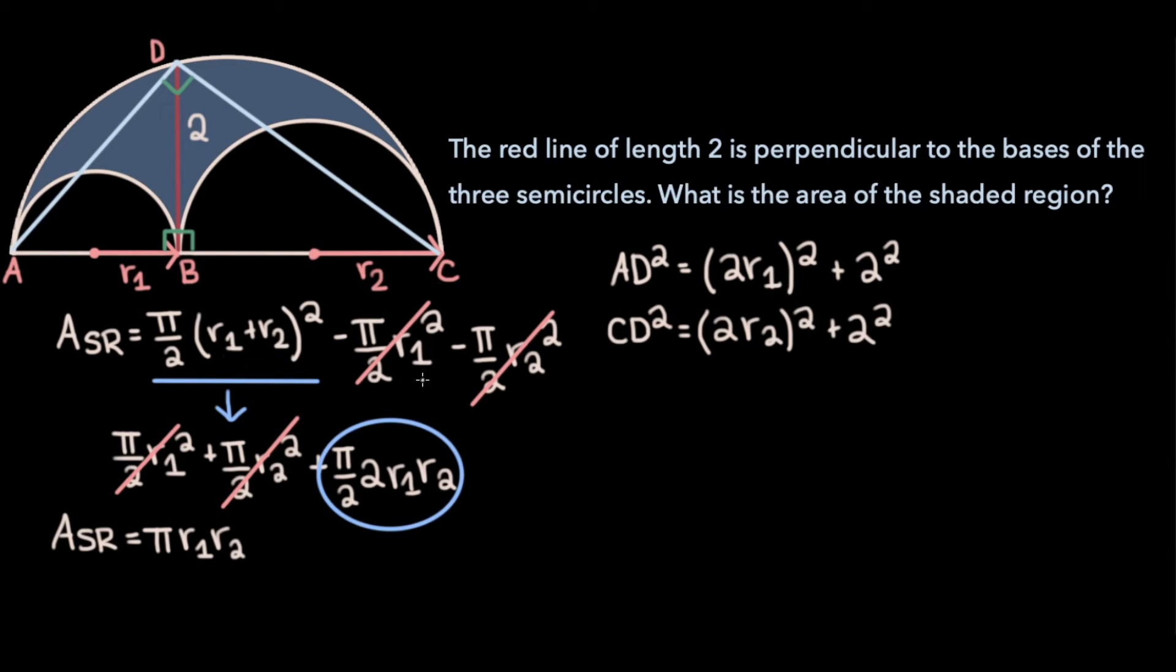And now if we apply the Pythagorean theorem on the big triangle ACD, we get the equation AC² equals AD² plus CD². Now we know the length of AC, it's just 2r1 plus 2r2. So this side of our equation becomes (2r1 + 2r2)². And this is equal to AD², which from the topmost equation we know is 4r1² + 4, plus CD², which the middle equation tells us is 4r2² + 4.